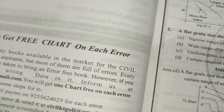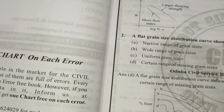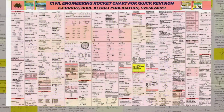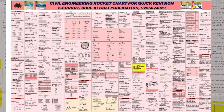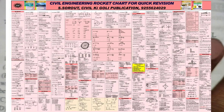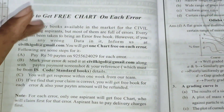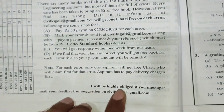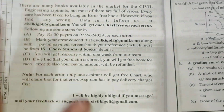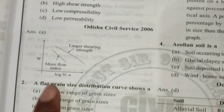If you find any error in this book, you will get a free civil formula chart. There are steps given for finding errors — if you find any error, you can follow these steps to get the free chart. Now let's start with the first subject: soil mechanics, questions and solutions, including numerical questions with solutions.